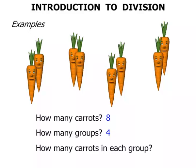How many carrots in each group? Well that's easy. We can see that each group is simply made up of 2 carrots.